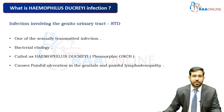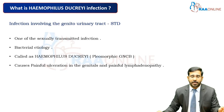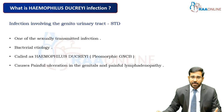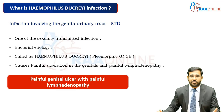So what is a Haemophilus ducreyi infection? It is an infection involving the genitourinary tract and it is an STD — a sexually transmitted disease. It is one of the most common bacterial sexually transmitted infections. The etiological agent is a gram-negative coccobacillus called Haemophilus ducreyi, and it is a common cause of painful genital ulceration associated with painful lymphadenopathy.